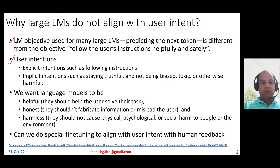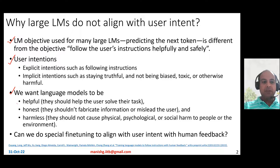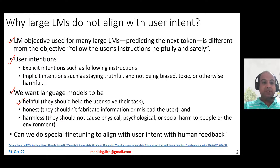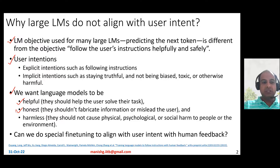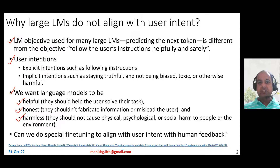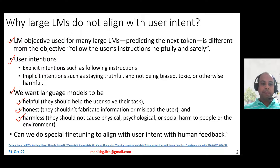What we want large language models to do is the following: we want them to be helpful — they should help the user solve their task. We want them to be honest — they shouldn't fabricate information, hallucinate, or mislead the user. And lastly, they should be harmless and not be offensive or toxic in nature, and should not cause physical, psychological, or social harm to people or the environment.